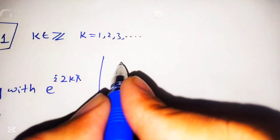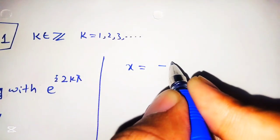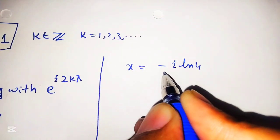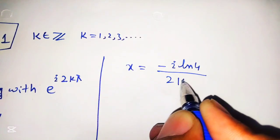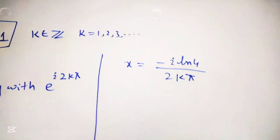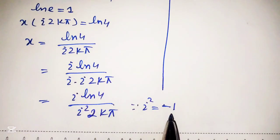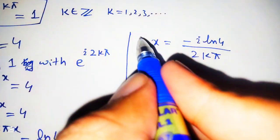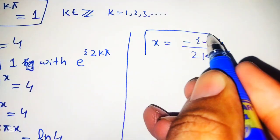Since iota squared equals minus 1, putting this value we get x is equal to minus iota natural log of 4 over 2k pi. This is the final solution of our given equation.